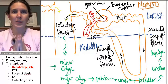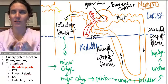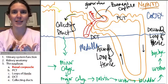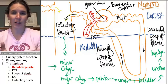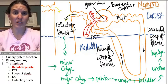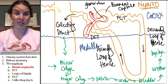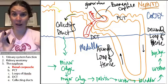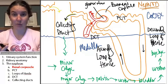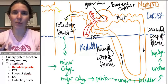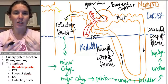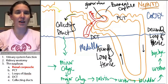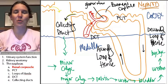The renal corpuscle — fantastic name. Renal means kidney, and corpuscle sounds like something you don't want to have anything to do with. I hope you don't feel that way by the end of this, because I think the renal corpuscle is fantastic.